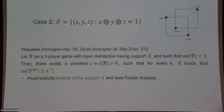Case two is the support of all (X,Y,Z) such that X XOR Y XOR Z = 1, which is a linear subspace over F2. For three-player games over this support with value less than one, we can prove a polynomial bound. This was first proven by Hongden and Raz in 2020, and we later gave a simplified proof. Both proofs exploit that the support is linear and use Fourier analysis. The ideas are likely more general than this particular case.